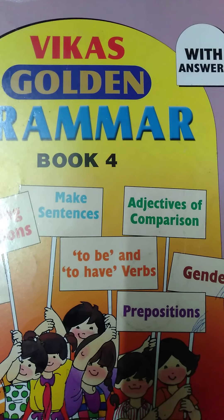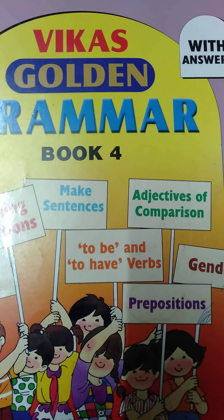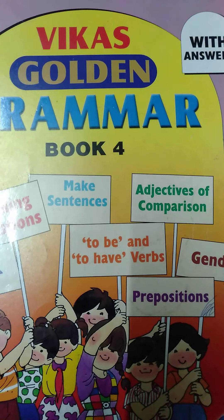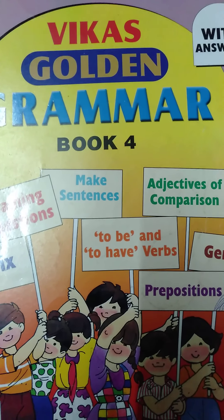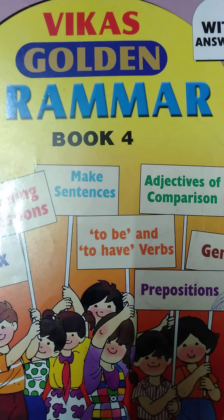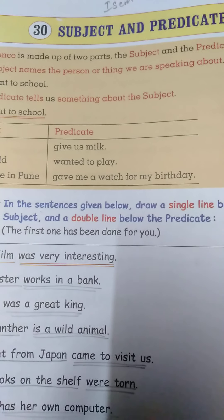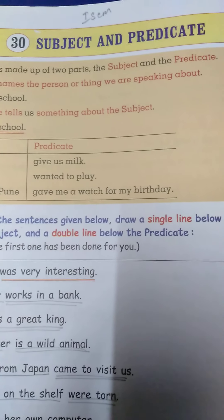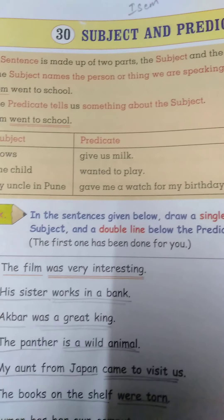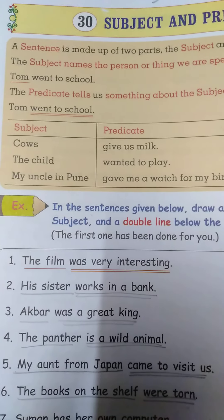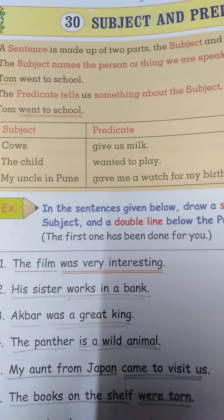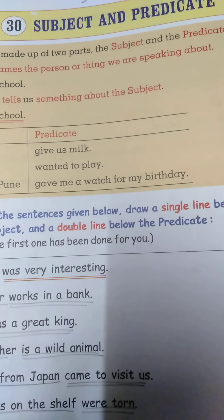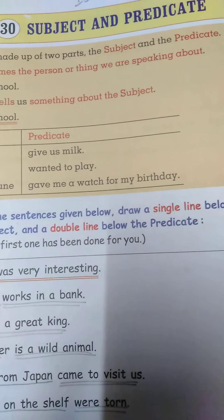Hello everyone. This is your English teacher from Welkin National School. Today we are going to learn English grammar from Standard 4th. See lesson number 13: Subject and Predicate. A sentence is made up of two parts — the subject and the predicate.